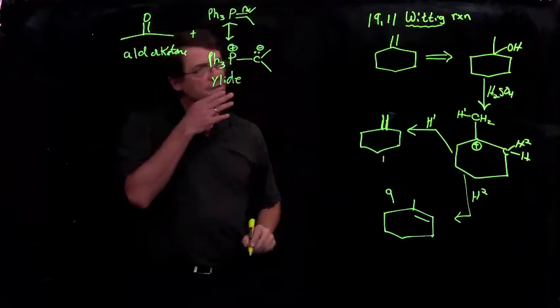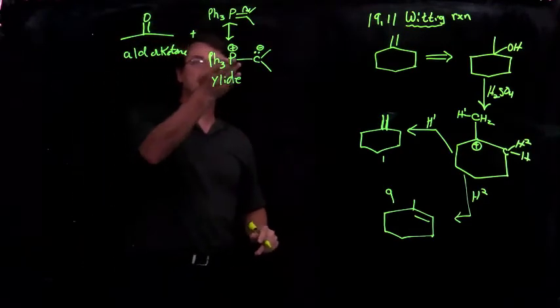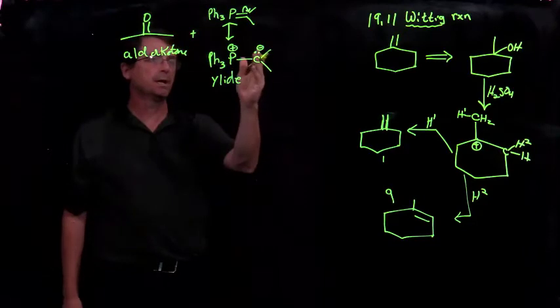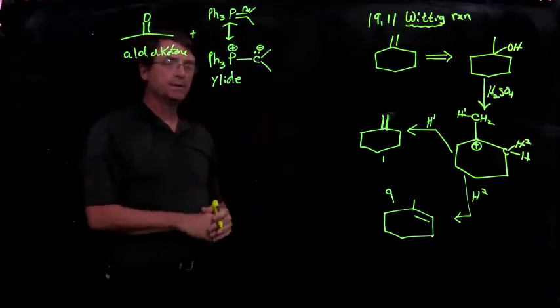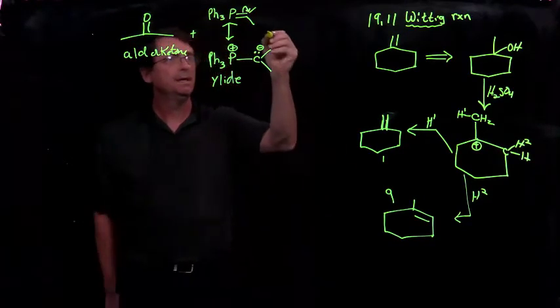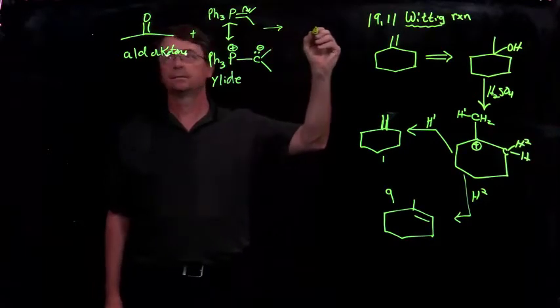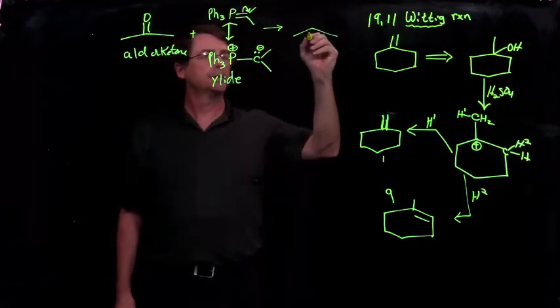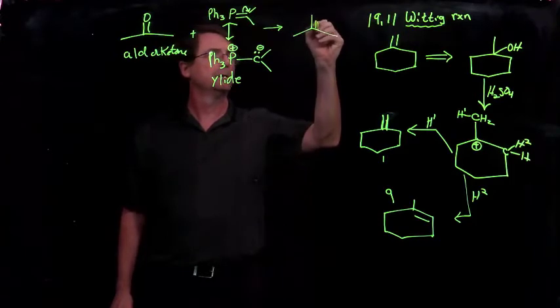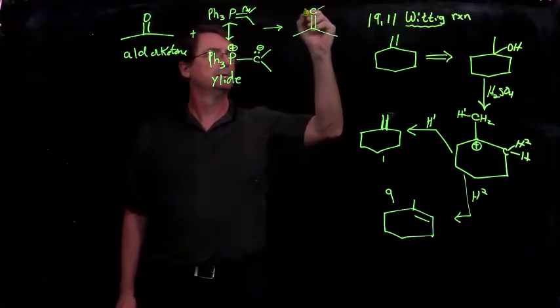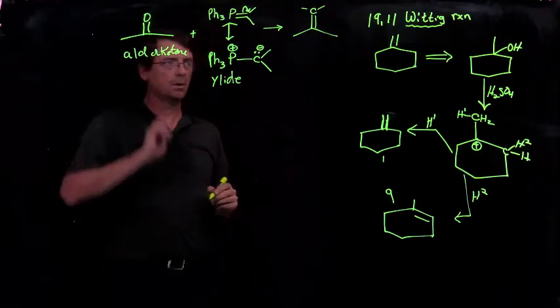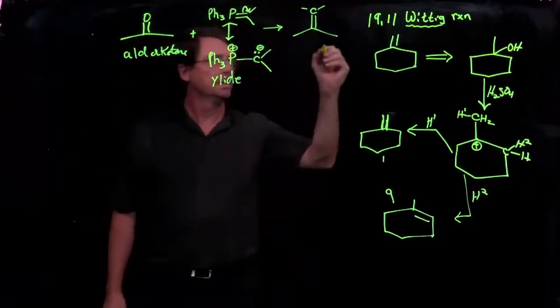And there are lots of ylides. There are zwitterions that in one of the resonance forms we can put an anion and a cation on adjacent atoms. And this reacts and puts the double bond in exactly the place where the carbon-oxygen double bond was.